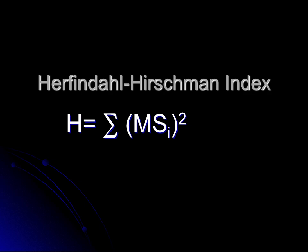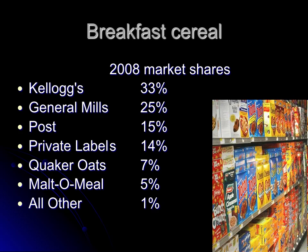Let me walk through a numeric example. This is the breakfast cereal industry with information based on 2008 market shares. We can see that Kellogg's is the largest firm at 33 percent, General Mills at 25 percent, Post at 15 percent, Private Labels 14 percent, Quaker Oats 7 percent, Malt-O-Meal 5 percent, and all other at 1 percent. If we were looking for the four-firm concentration ratio, we would simply add up the four largest: 33 plus 25 plus 15 plus 14. But what we're interested in here is calculating the Herfindahl Index, so we'll have to take these market shares and square them.